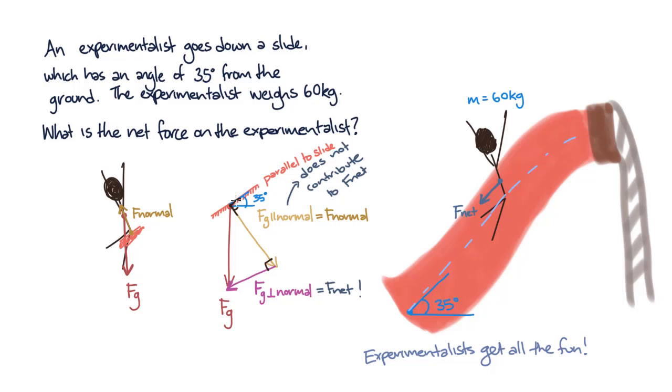Now the angle of the slide and the angle of the normal force together make up a 90 degree angle. And similarly, the horizontal and vertical components will also make up a 90 degree angle. So we can see that the angle at the top of our triangle is also equal to 35 degrees.